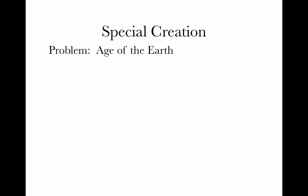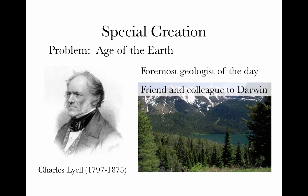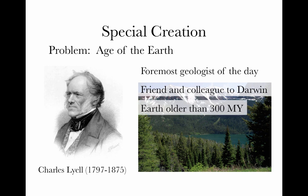These layers appeared to represent an orderly deposit — the oldest found deeper in the Earth, newer layers closer to the surface. This idea was formalized by Charles Lyell, the foremost geologist of his day and a friend and colleague to Darwin. Lyell calculated, based on the strata and processes like sedimentation found in England, that the Earth must be older than 300 million years — an unimaginable amount of time for a society that did not think the world was any older than 6,000 years.